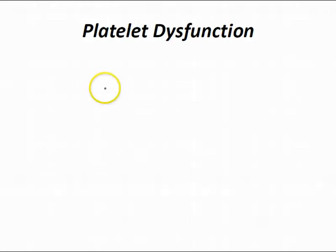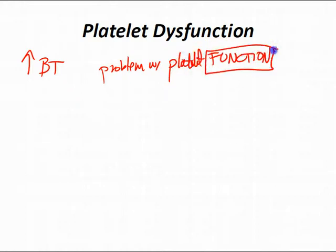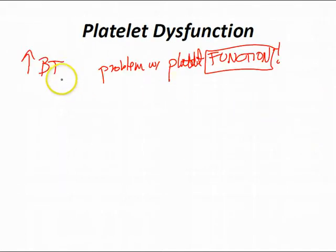Now, platelet dysfunction — these are qualitative defects, meaning platelet count, PT, and PTT are all normal, but you have an increased bleeding time. This bleeding is not due to lack of platelets; there is a problem with platelet function. This can be due to surface defects like COX inhibition, clopidogrel, etc. We're going to talk about adhesion defects: Bernard-Soulier and Von Willebrand's factor disease.